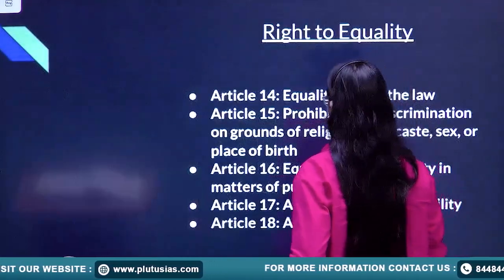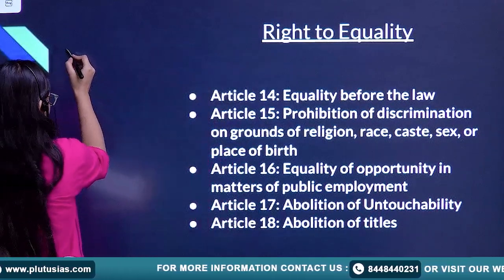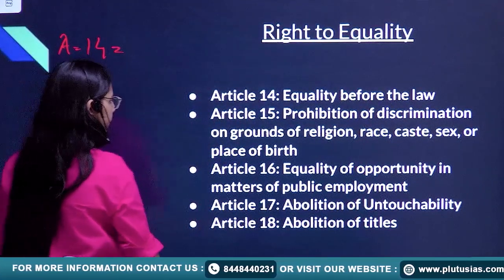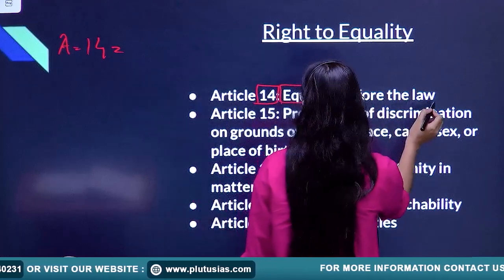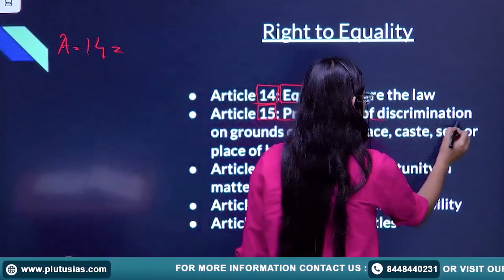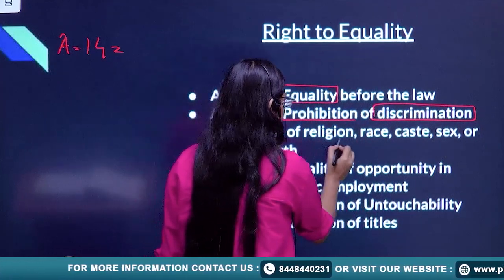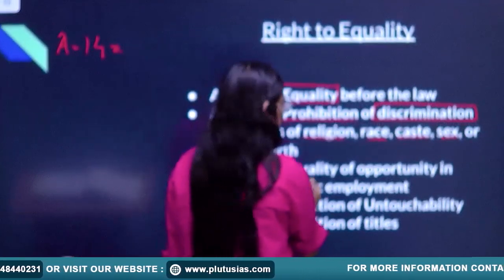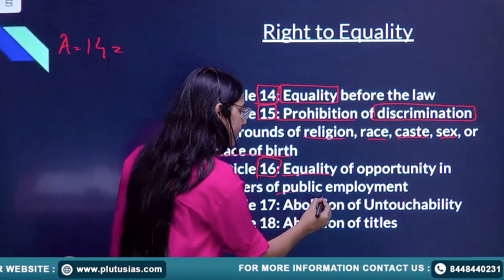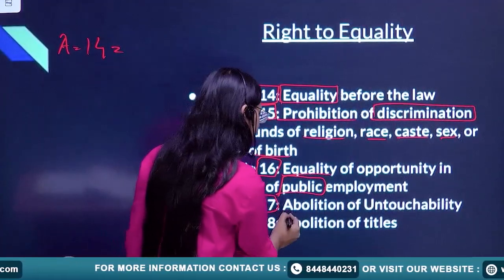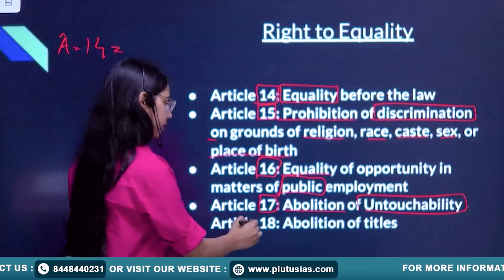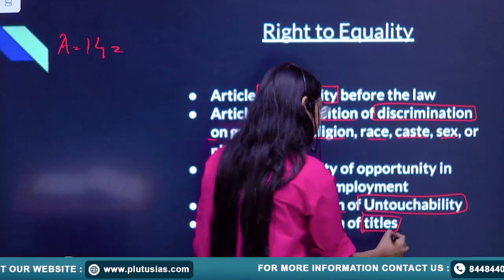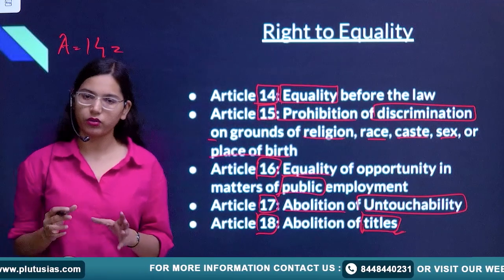Let's start with Article 14. Article 14 says equality before law. Article 15 says prohibition of discrimination on grounds of religion, race, caste, sex or place of birth. Article 16 is equality of opportunity in matters of public employment. Article 17 comprises abolition of untouchability, and Article 18 is abolition of titles. These keywords are important for you to remember these articles.